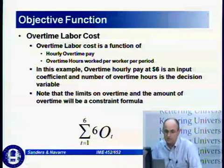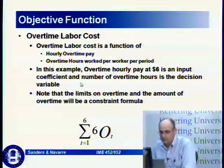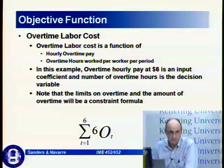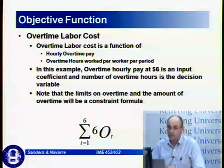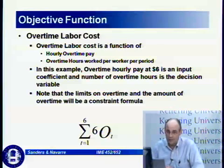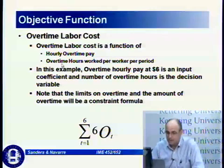Overtime labor cost is a function of the hourly overtime pay and the overtime hours worked per worker per period. Overtime hourly pay is $6 — that's an input coefficient — and the number of overtime hours worked in the period is a decision variable calculated by the model. The limits of overtime will be a constraint formula. So for Red Tomato, overtime per week is capped, totaled per month, and the overtime labor cost is $6 per hour multiplied by the amount of overtime hours.